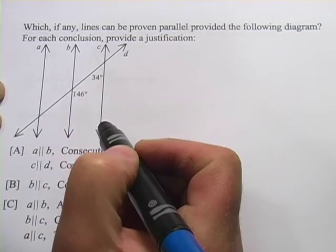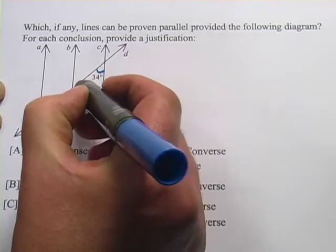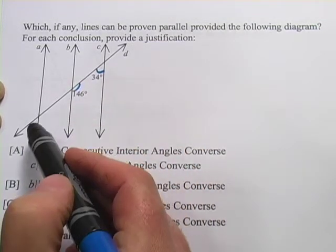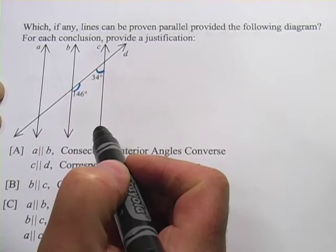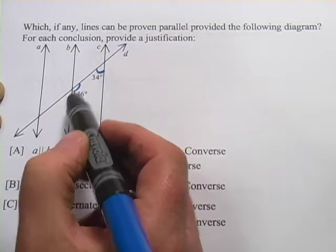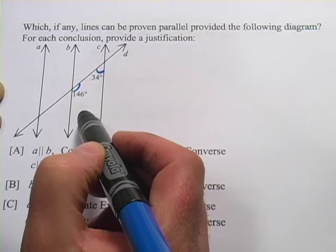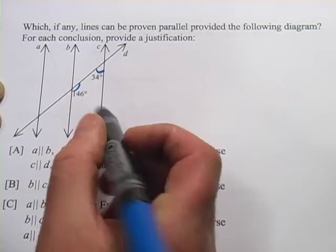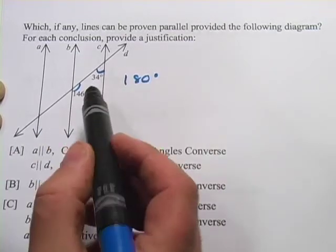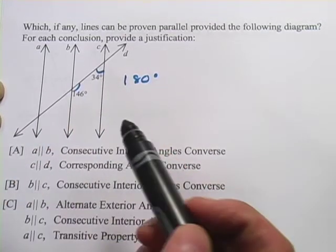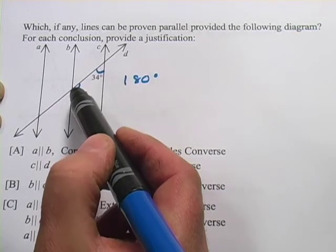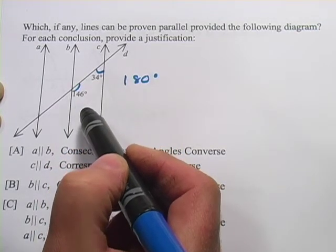What I notice is that these guys are consecutive interior angles, if D's the transversal and B and C would be the parallel lines. If B and C are parallel, they should add up to 180. So 146 plus 34, well, that is 180. So it looks like B and C are parallel, and it's the consecutive interior angles converse that proves it.